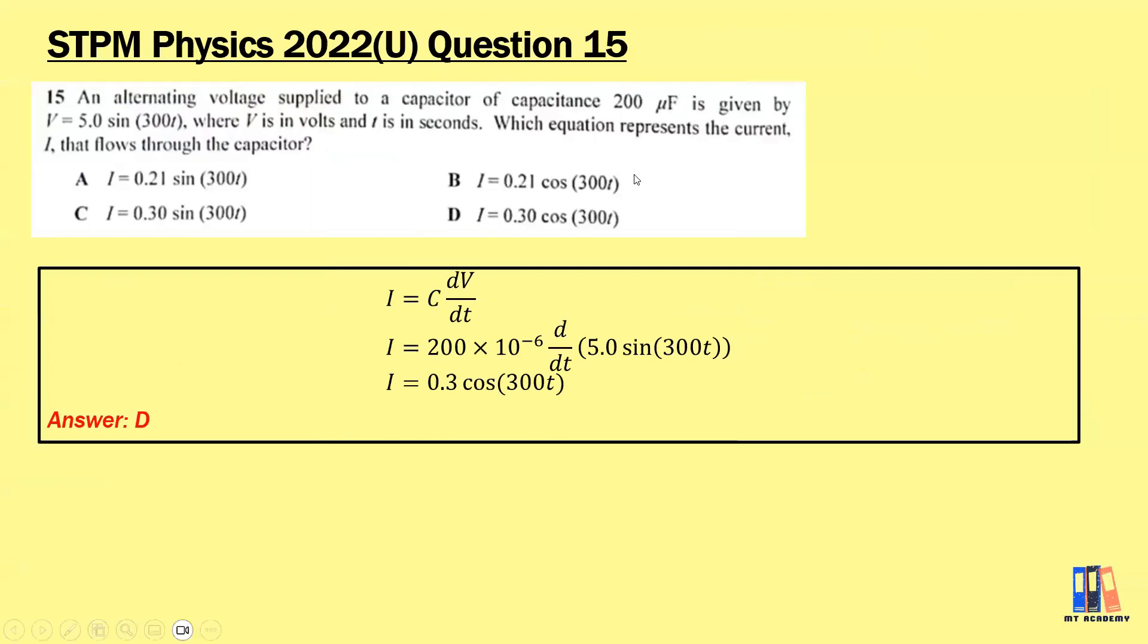Next question: An alternating voltage applied to a capacitor of 200 microfarad is given. Which equation represents the current that flows through the capacitor? We can use the formula I equals C dV/dt, where you learned this in the derivations. We have the capacitance 200 microfarad and we differentiate the equation of the voltage. The final current is 0.3 cos(300t). Answer is D.